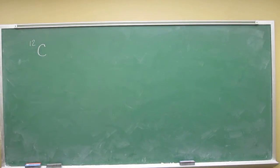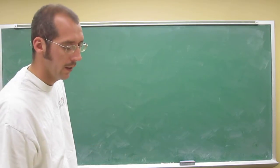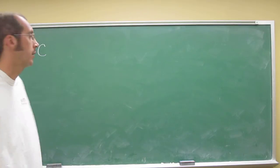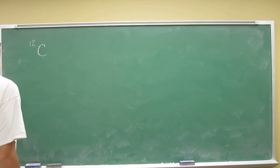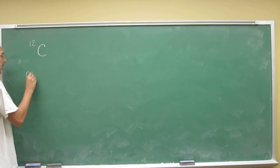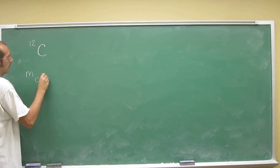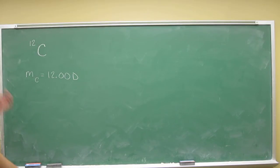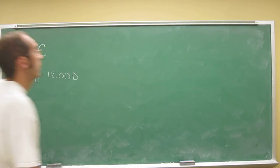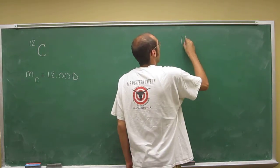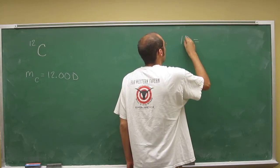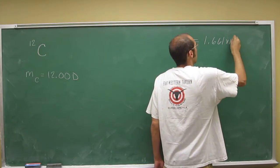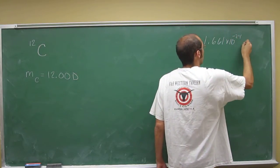In order to do this, you have to do a series of these conversion factors. You know the mass of carbon-12, right? The mass of carbon is 12.0. And you also know that 1 Dalton equals 1.661 times 10 to the negative 24th grams.